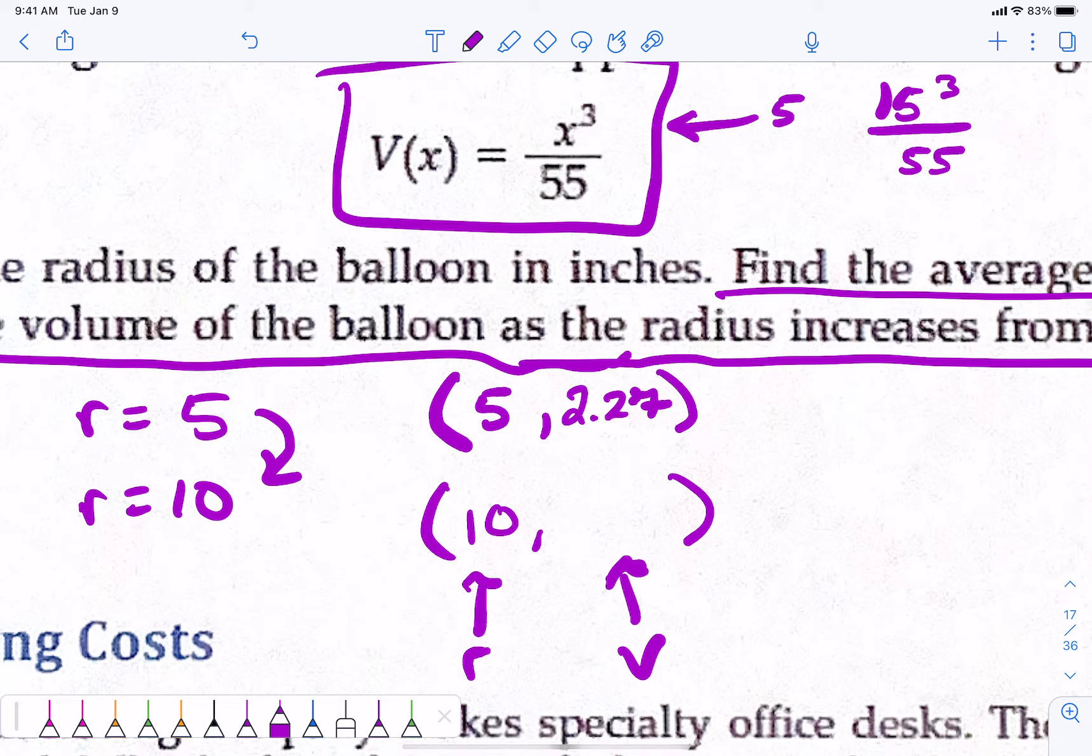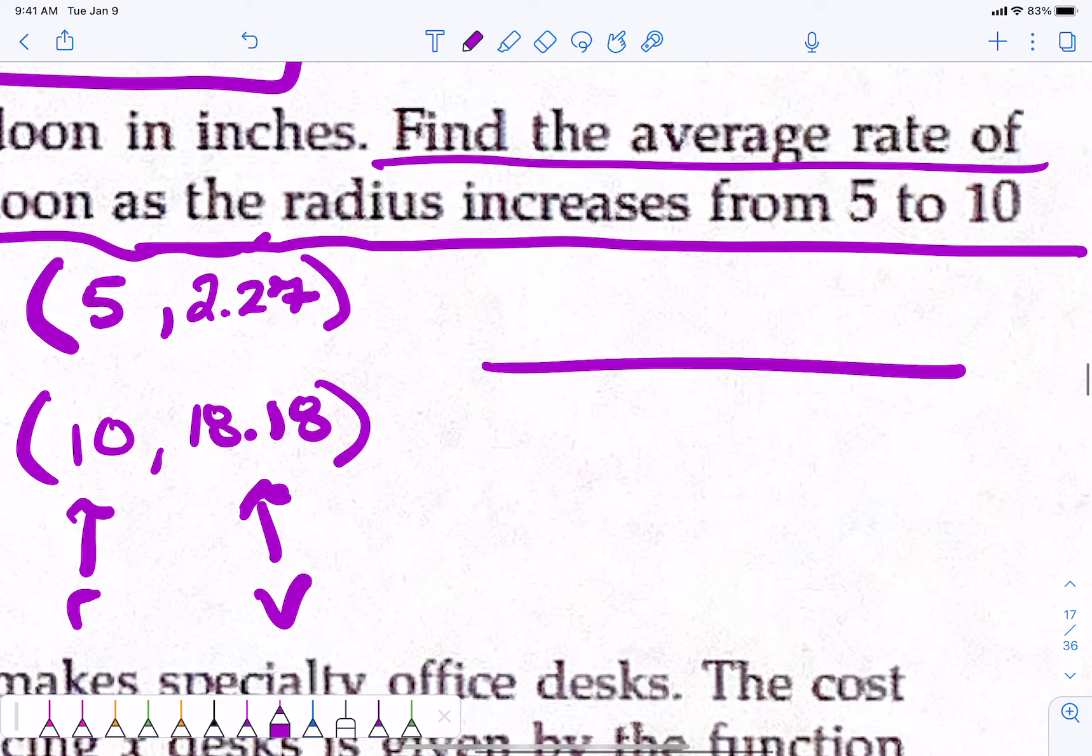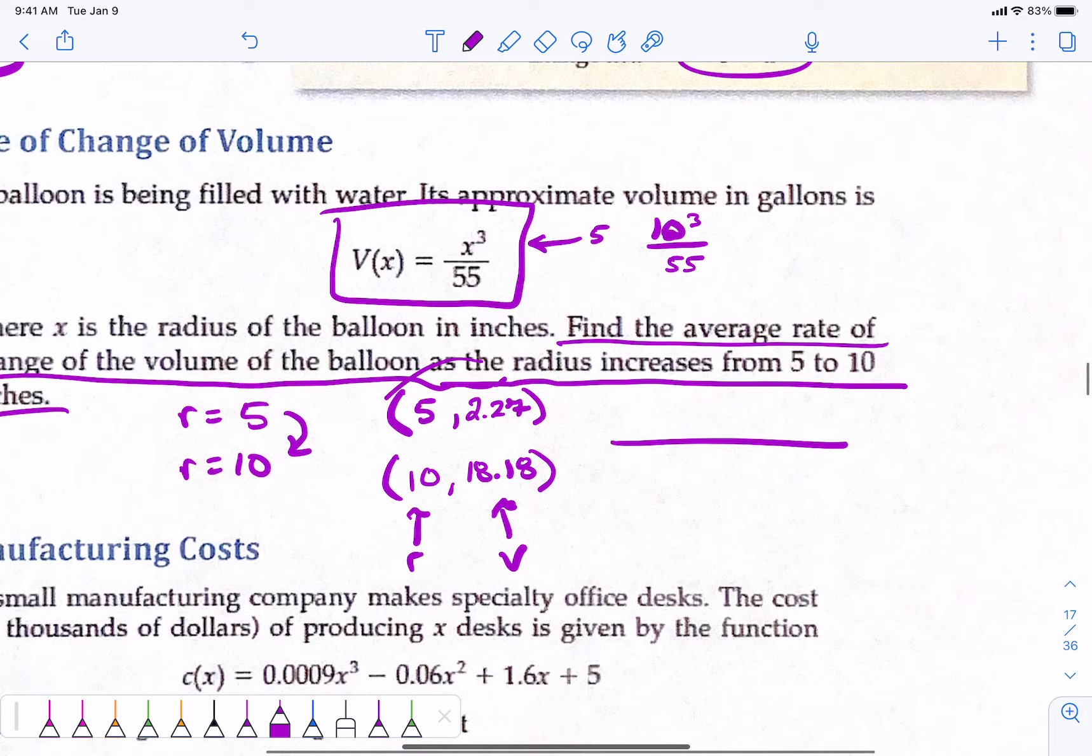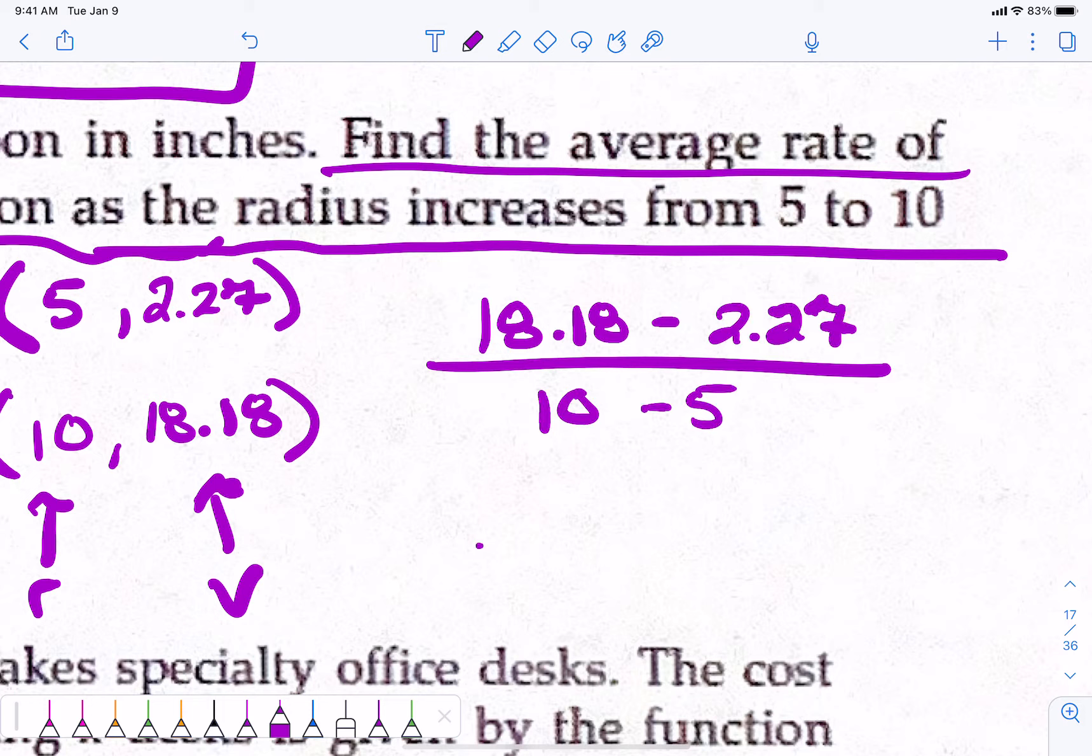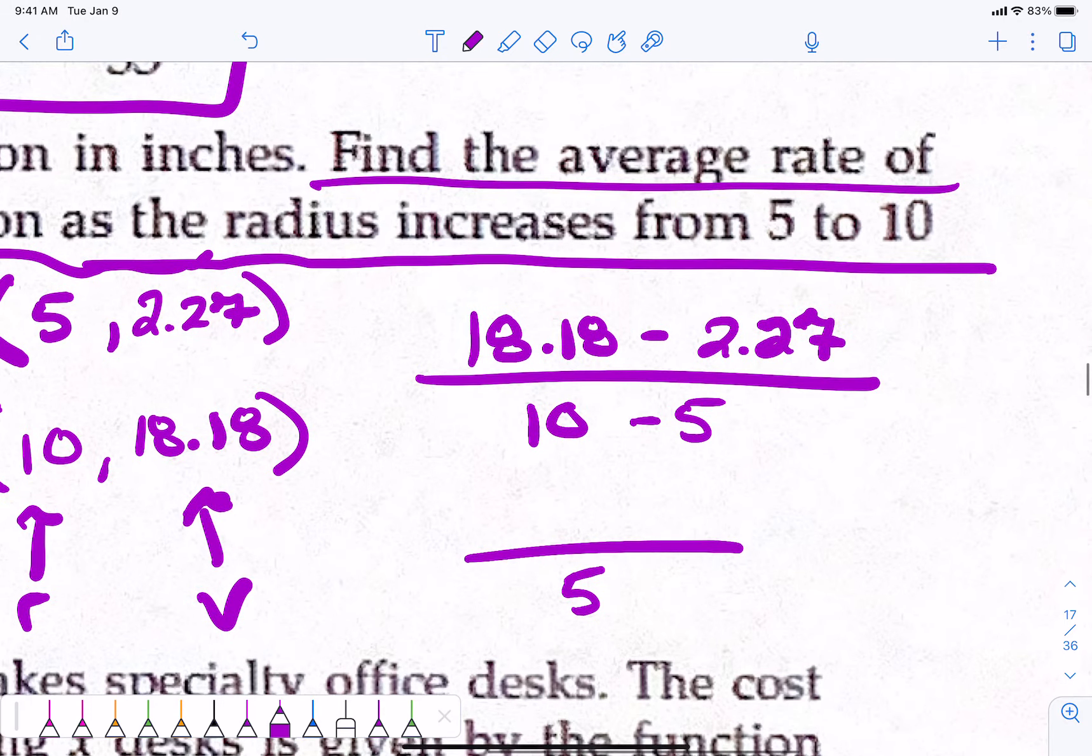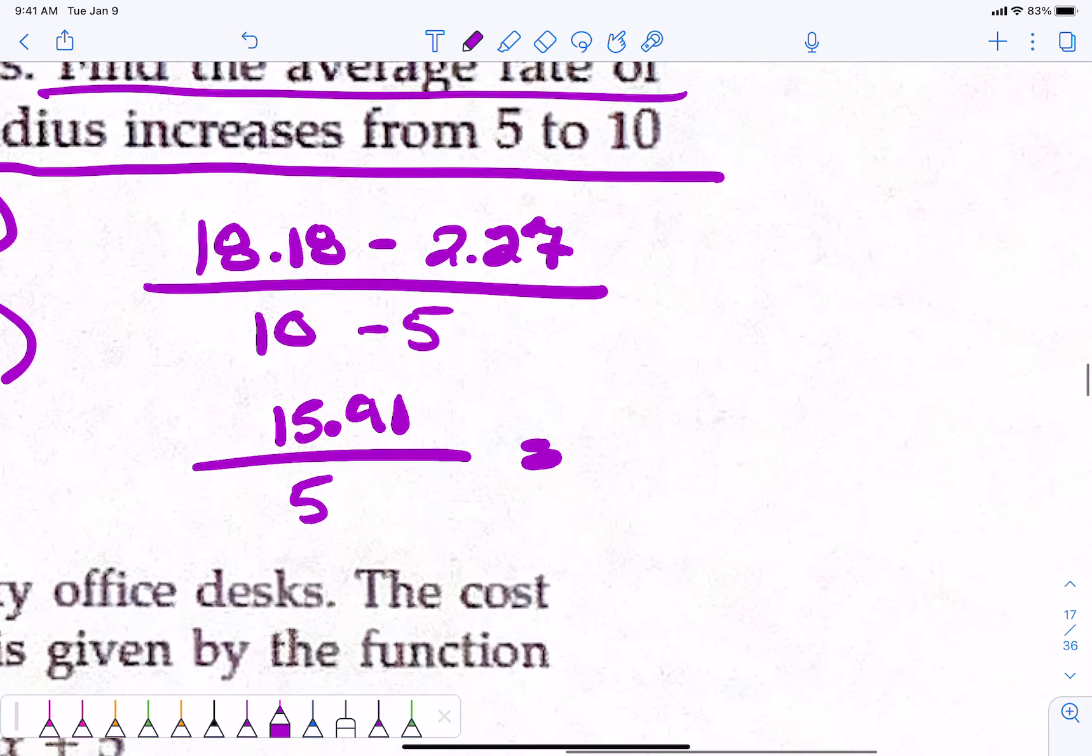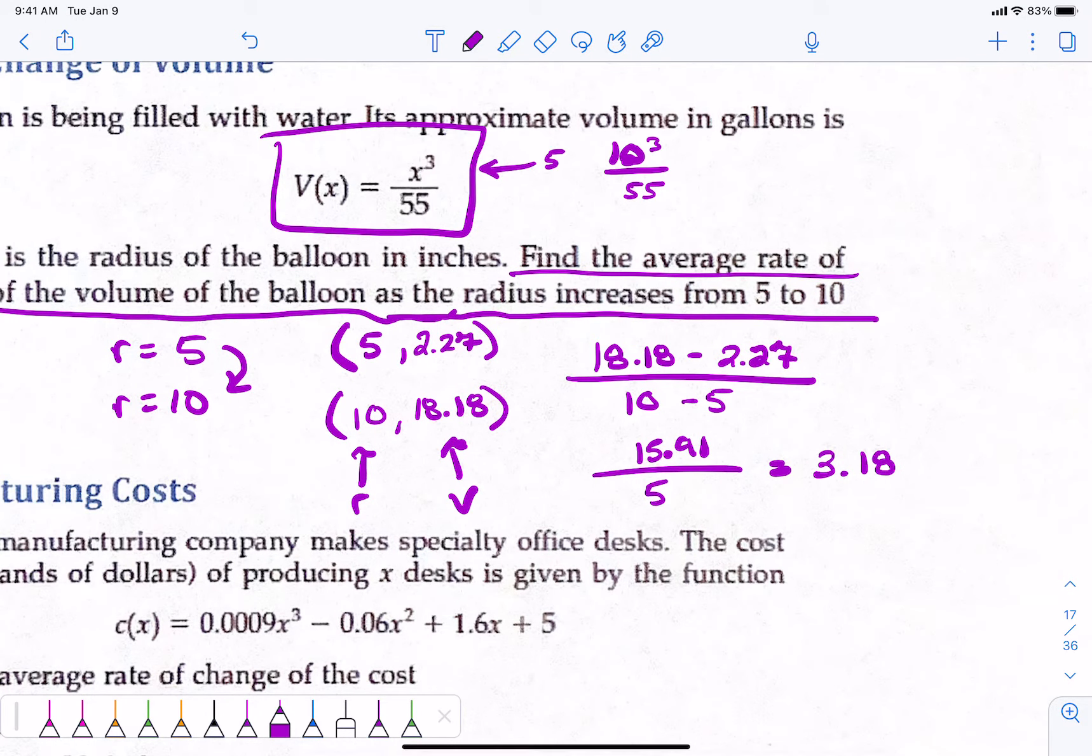If you plug 10 in, 10 to the 3rd power is 1,000. So, we take 1,000 divided by 55 which is 18.18. So, the average rate of change of the volume is y2 minus y1, x2 minus x1. I really would encourage you to write your ordered pair each time because it makes it super easy. 18.18 minus 2.27 and then 10 minus 5.